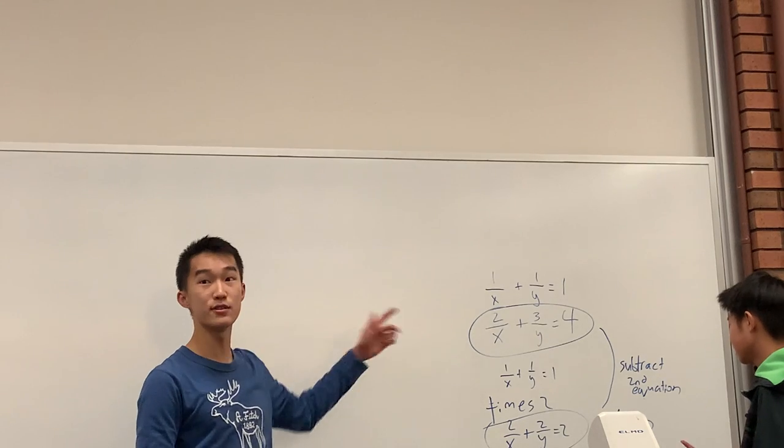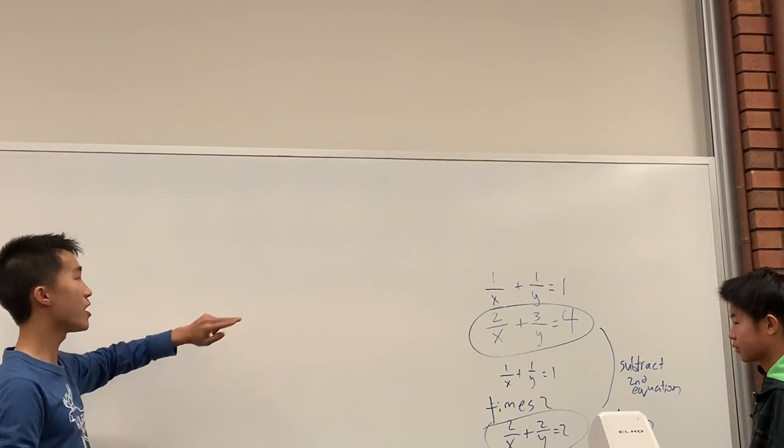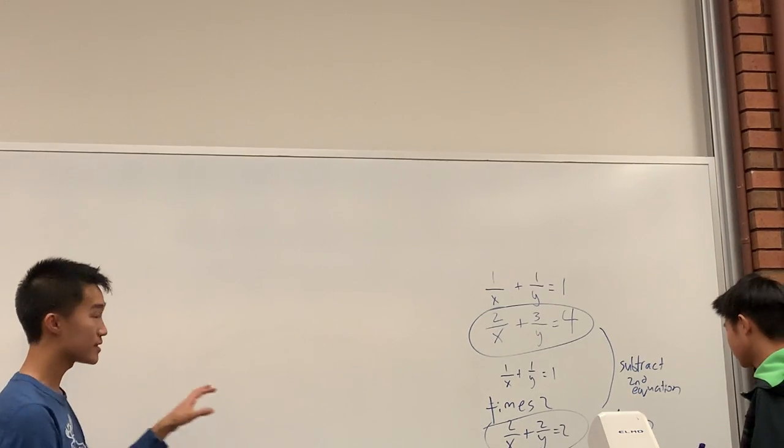Okay, and now what you can do is you can use the trick I showed you earlier. So if you have 1 over 1 over something, that just equals to something at the bottom.